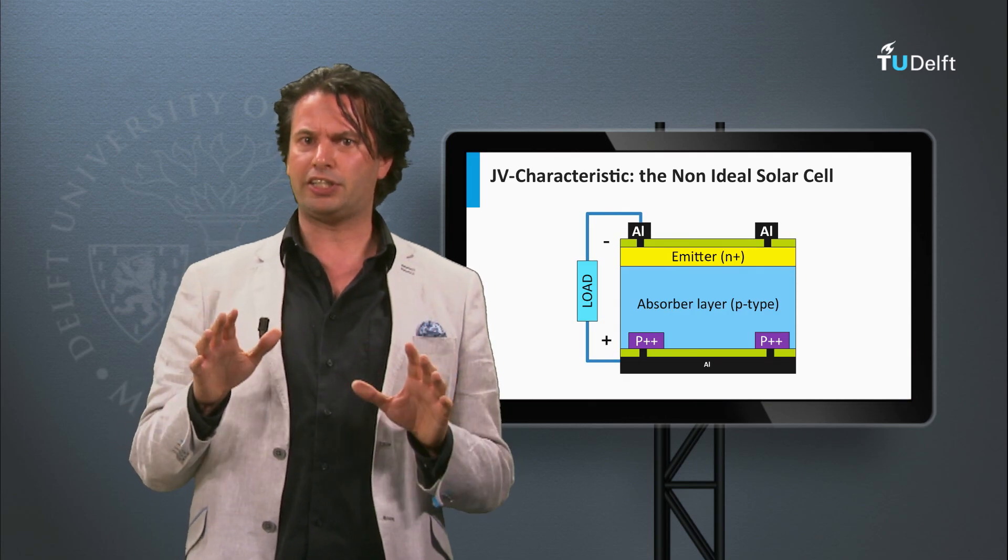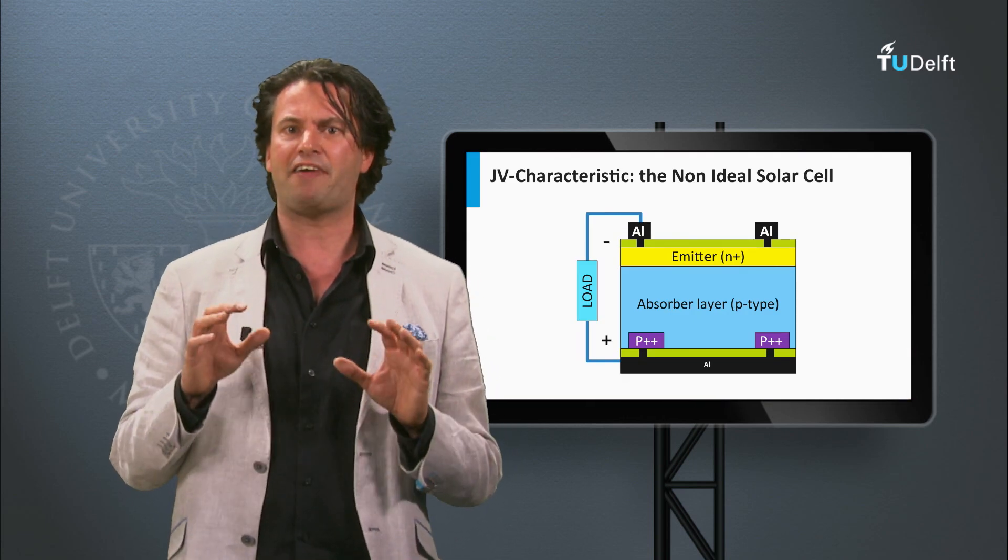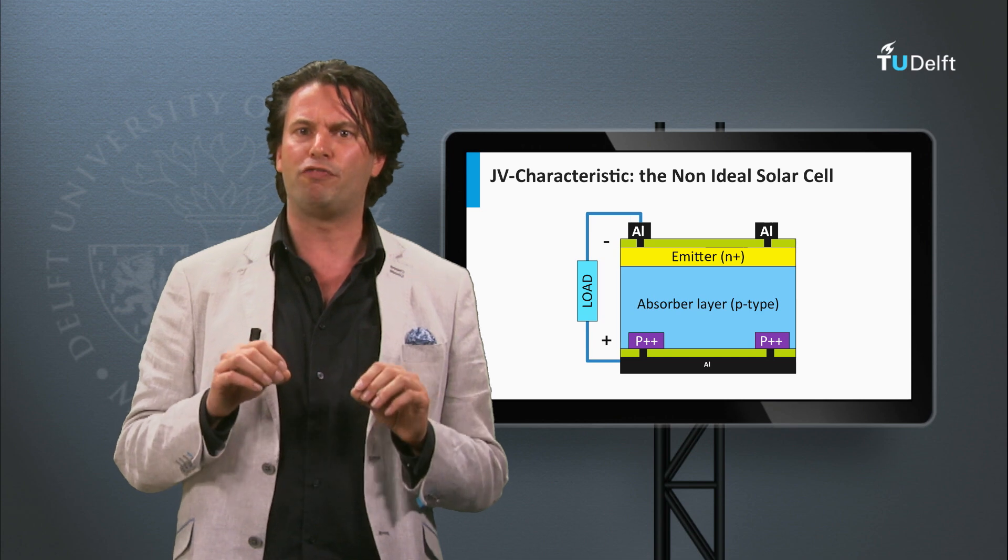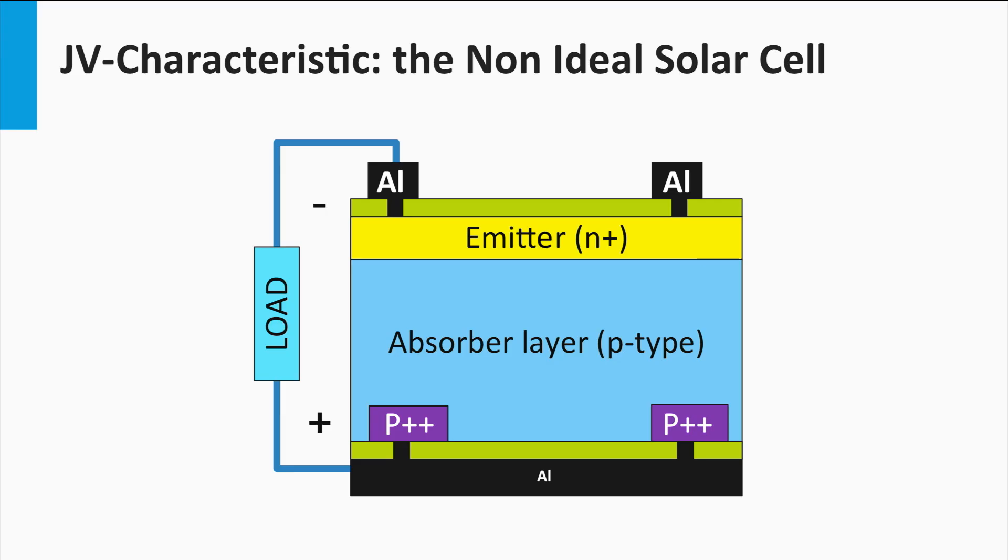The first resistance is called series resistance. Several effects can be the origin of a series resistance in a solar cell. Let's consider a standard crystalline silicon solar cell, which we will discuss in great detail next week. First, the current moving through the semiconductor materials of the p-n junction can experience a resistance. Secondly, the interface between the semiconductor material and the metal contacts can act as a resistor as well. Thirdly, the metal contacts will have a resistance as well.